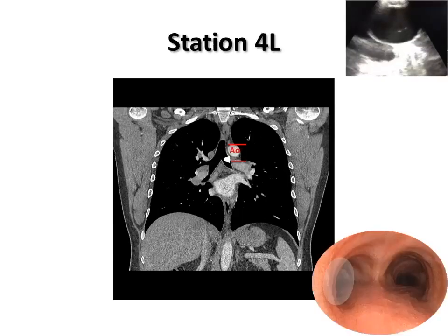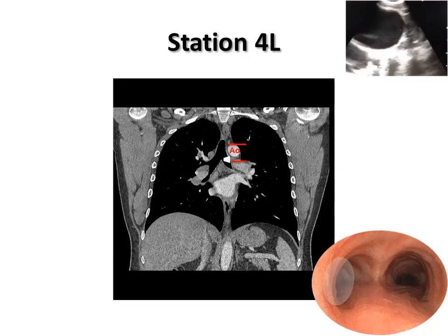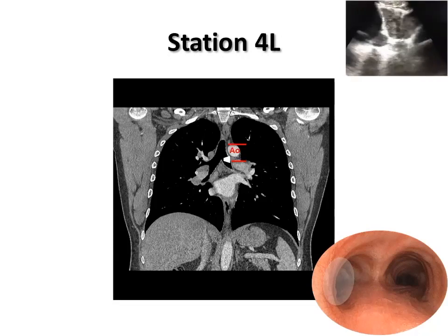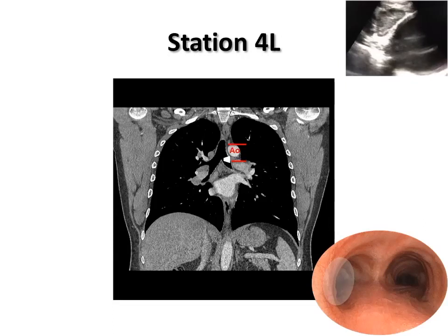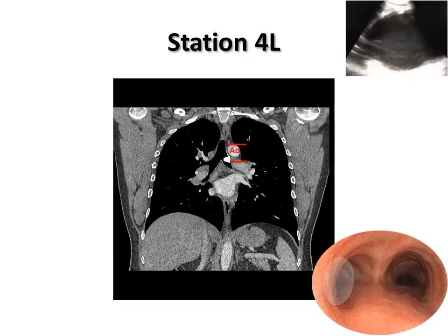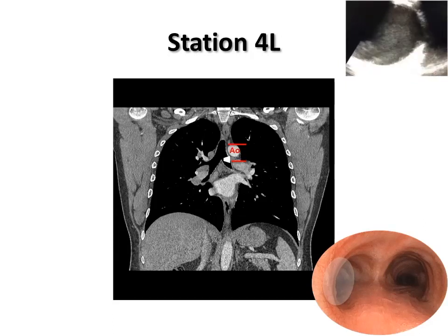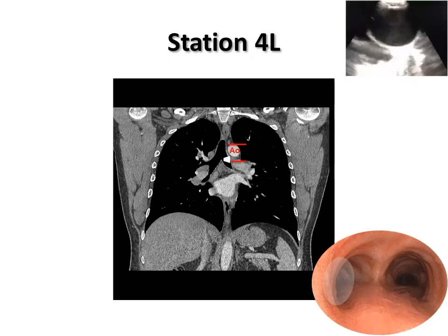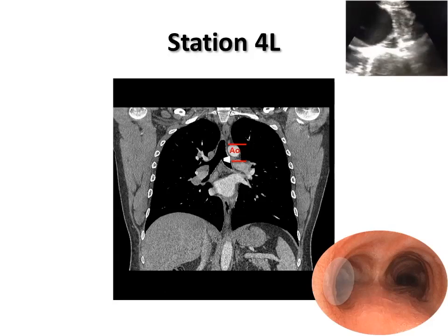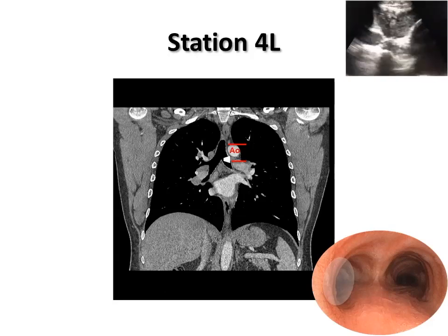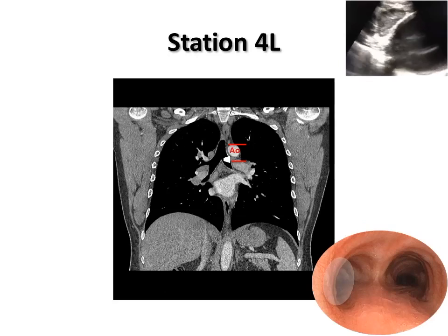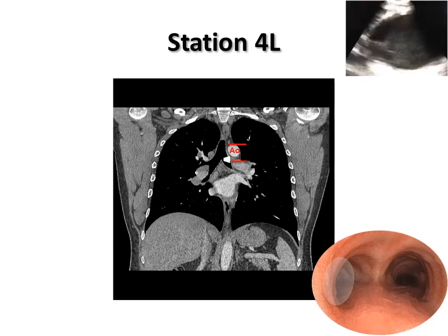With the eBus scope retracted at the proximal left main bronchus and the transducer turned to the left lateral wall, station 4L lymph nodes can be seen between the pulmonary artery and the aorta. Station 4L includes nodes to the left of the left lateral wall of the trachea. The upper border is the upper margin of the aortic arch, and the lower border is the upper margin of the left main pulmonary artery.